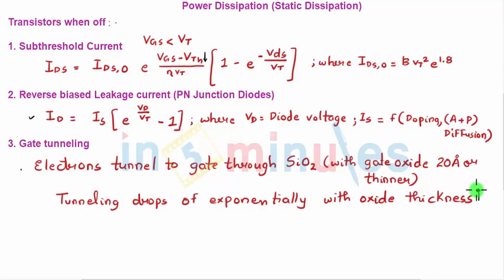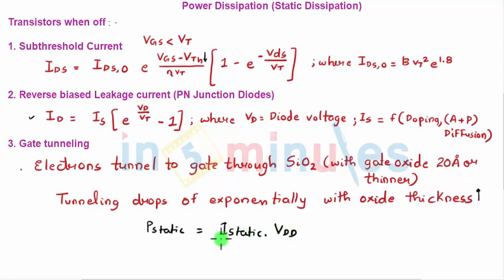All three — sub-threshold current, reverse-bias leakage, and gate tunneling — constitute static power dissipation. In a CMOS circuit there is no direct path from VDD to ground, so in quiescent conditions P_static equals I_static times VDD, where I_static is the sum of all leakage currents. To reduce static power, the equations give hints: reducing VGS would decrease sub-threshold current, similarly reducing VDS, or increasing the threshold voltage. However, increasing threshold voltage causes the transistor to take longer to turn on, reducing circuit speed and increasing delay.